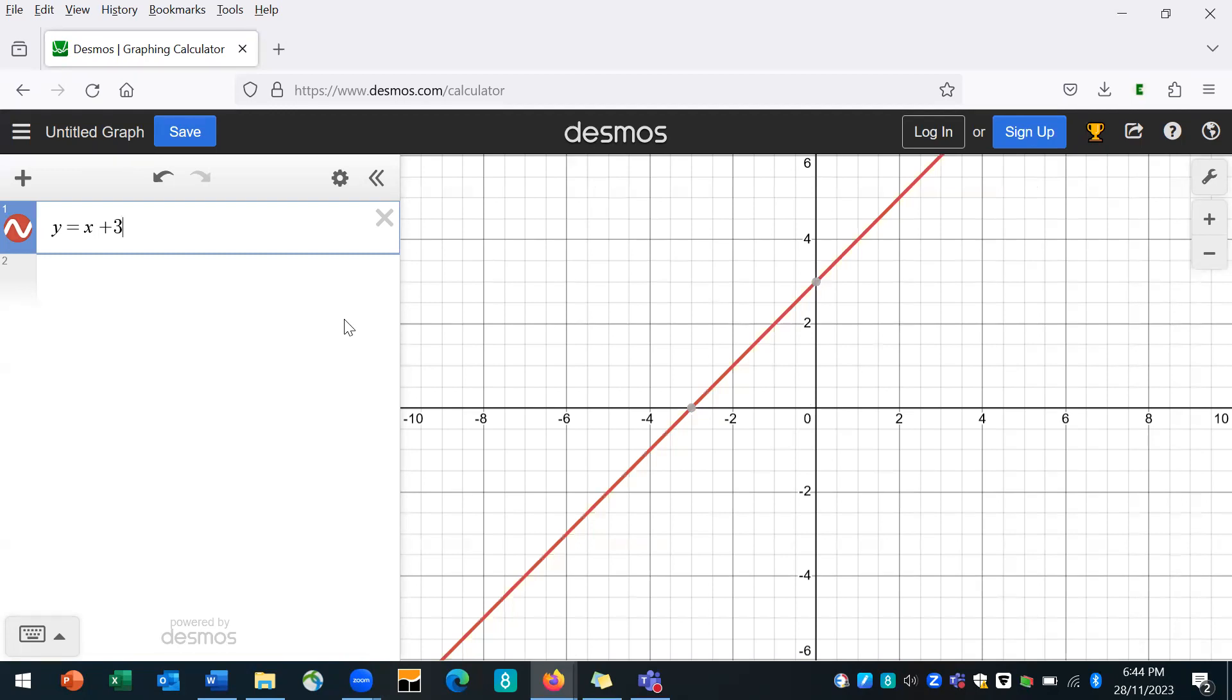So it means that when x is 0, y is 3. You can see 0 comma 3. When x is 1, y is 4. So when x is 1 here, y is 4 there.